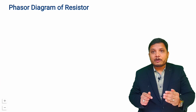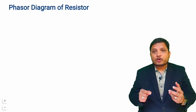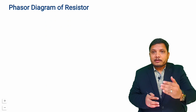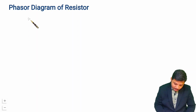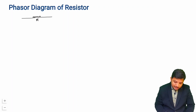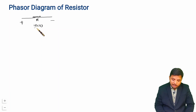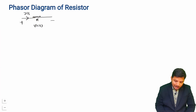After that I will explain how the phasor diagram looks for a resistor, and by waveforms I will show you how voltage and current appear with each other. So let us start with the basic diagram of a circuit with a resistor. Here I draw a resistor with value R and apply voltage V(t), which is a sinusoidal voltage. Based on this voltage, the current passing through the resistor is I(t).